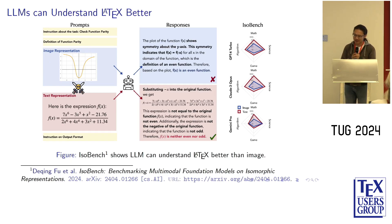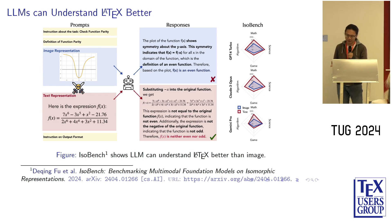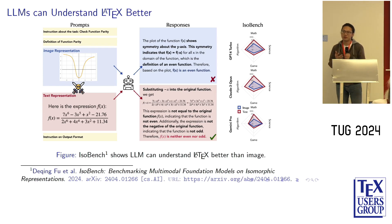There's very recent research on how large language models can understand math. For example, if we input an asymmetric functions image, the model may mistakenly think it's symmetric, because the visual encoder of the large language model may over-compress the information from the picture. But the model usually can understand the LaTeX code better, which highlights the need for the model to capture PDF information as originally as possible.